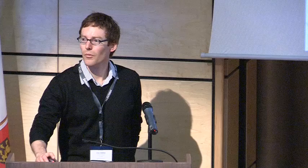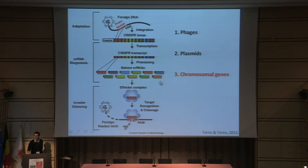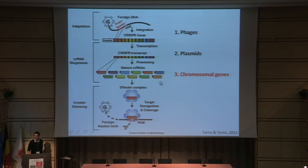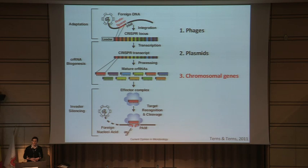Just to highlight briefly some of the features: upon viral or plasmid acquisition, part of the viral or plasmid genome can be sampled — named the protospacer — and incorporated into the CRISPR array. This is then transcribed, processed into small interfering RNAs, which are loaded onto the Cascade complex of Cas proteins, and then leads to targeting of complementary nucleic acids. These systems can interfere with plasmids and with bacteriophage.